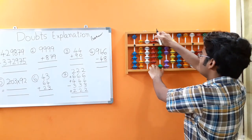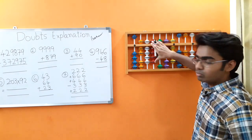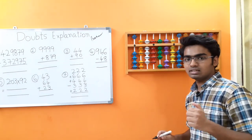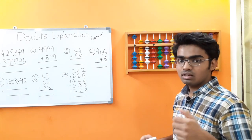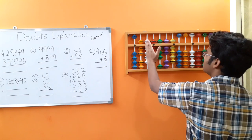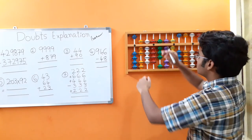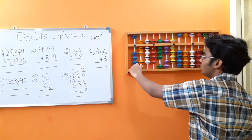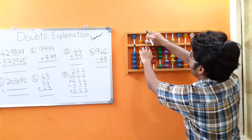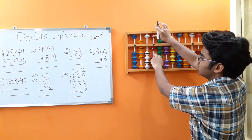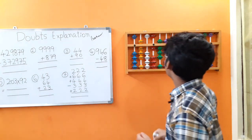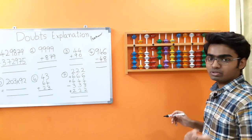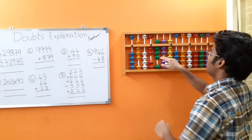Next we have 2. We cannot add 2 directly on this rod as it is completely occupied, and even the small boss 5 is also occupied. So we make use of the big friends concept. 2's friend is 8, so the statement is: add the boss 10, less the friend 8. But even the ten thousands rod is occupied, so we need to make double shifts — add the boss 10 on the next rod. I have added the boss 10 and less the friend 8. Next, add 9 on the hundreds rod. We cannot add 9 directly as we have only one bead at the lower end, so make use of big friends concept: add the boss 10, less 9's friend 1.